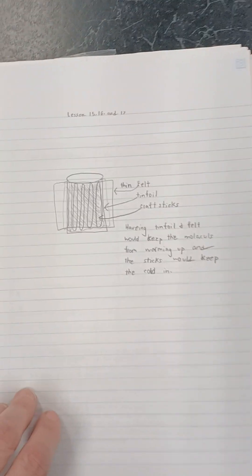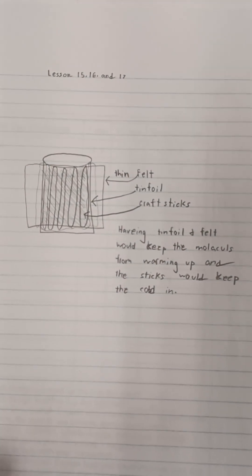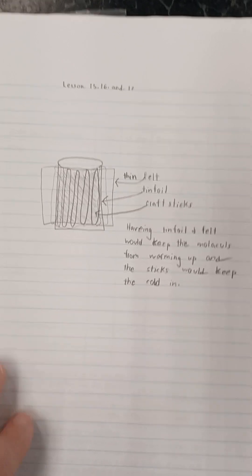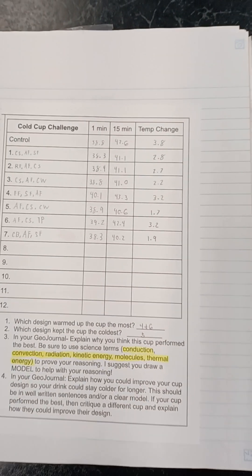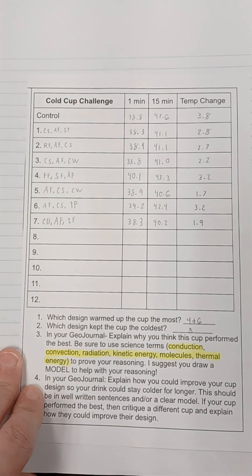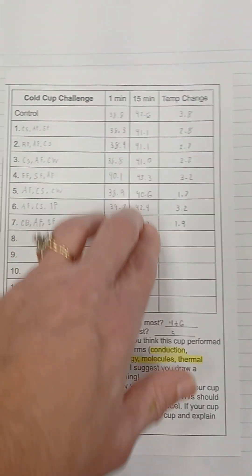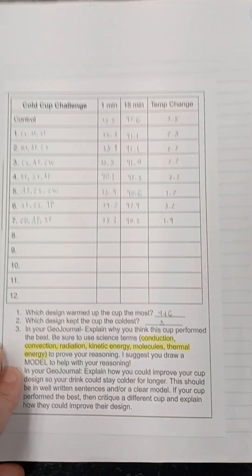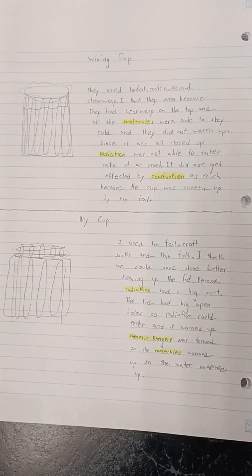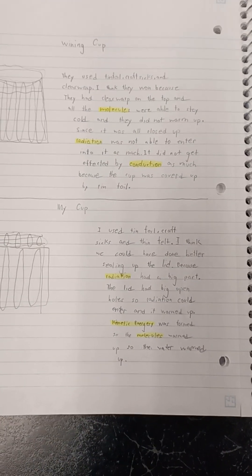The kids did the cold cup challenges in 15, 16, and 17. I combined that over several days, and this was the plan for their experiment. Then we conducted a class experiment and compared data and who created the best design. These abbreviations were the materials they used, and they answered these questions right here in their geo journal. What was the winning cup and their cup?